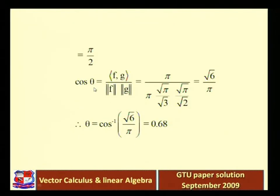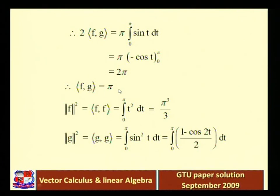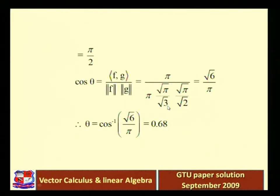Finally, cos θ = <f,g> / (‖f‖·‖g‖) = π / (√(π³/3) · √(π/2)). Substituting the values: ‖f‖ = π·√π/√3 and ‖g‖ = √π/√2. So cos θ equals pi divided by that product of norms.